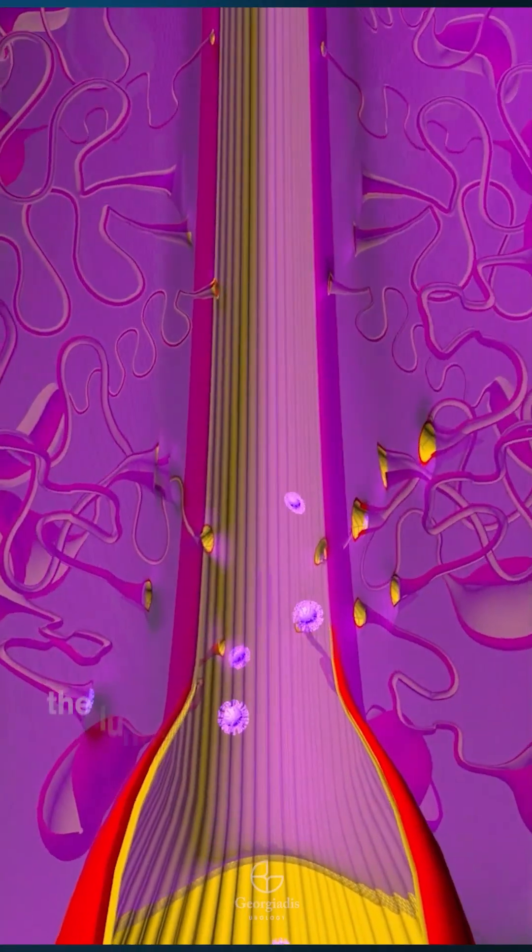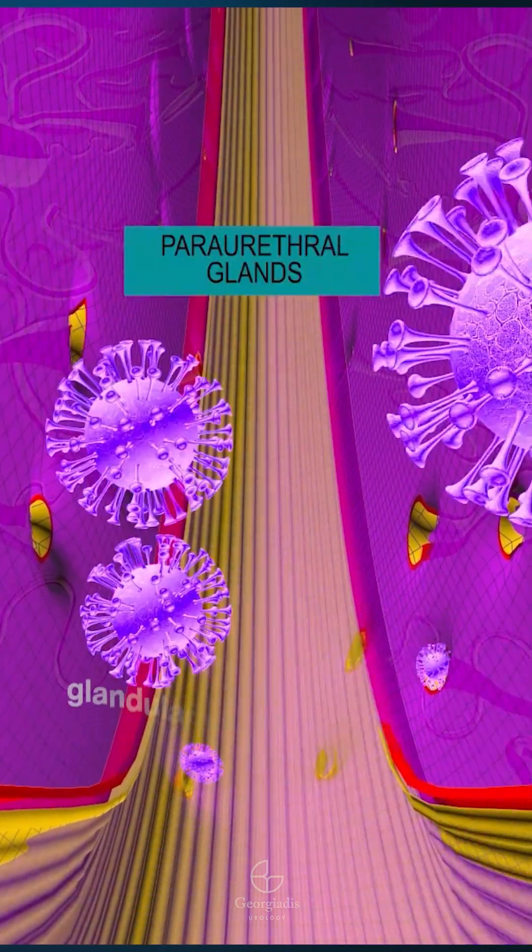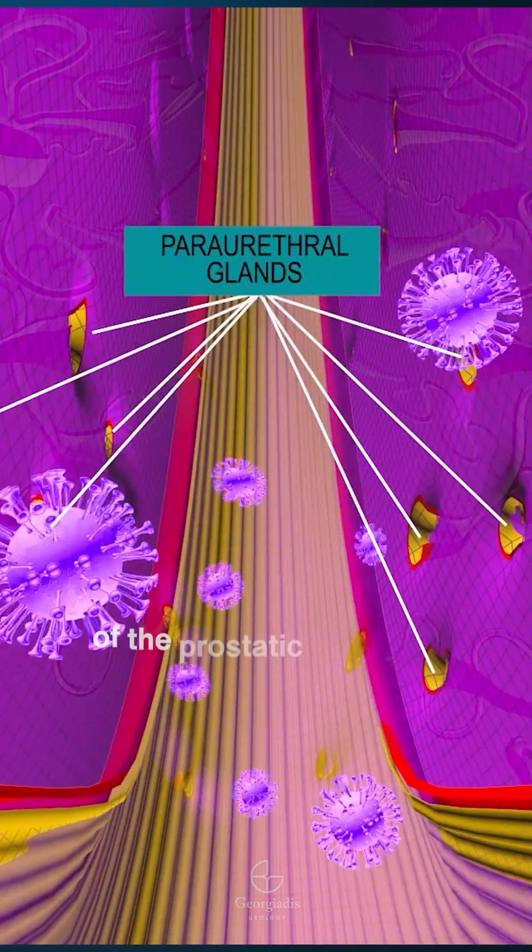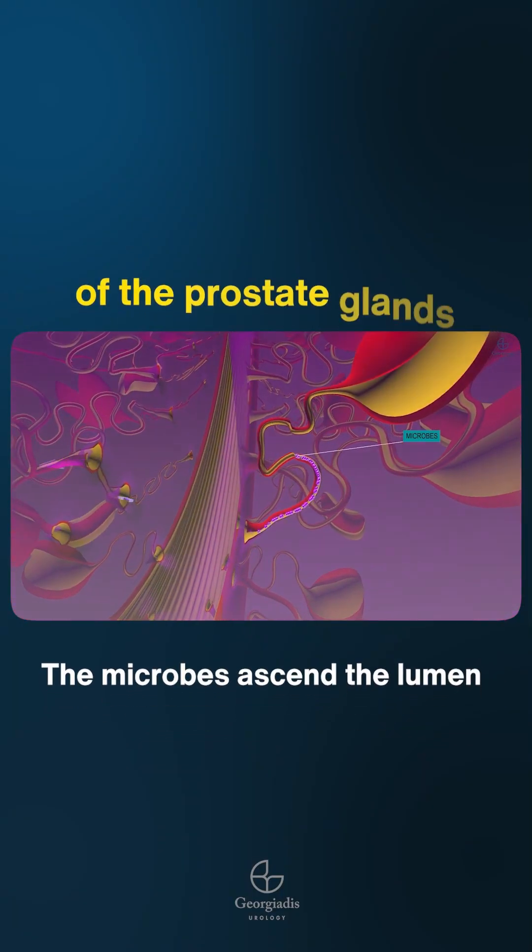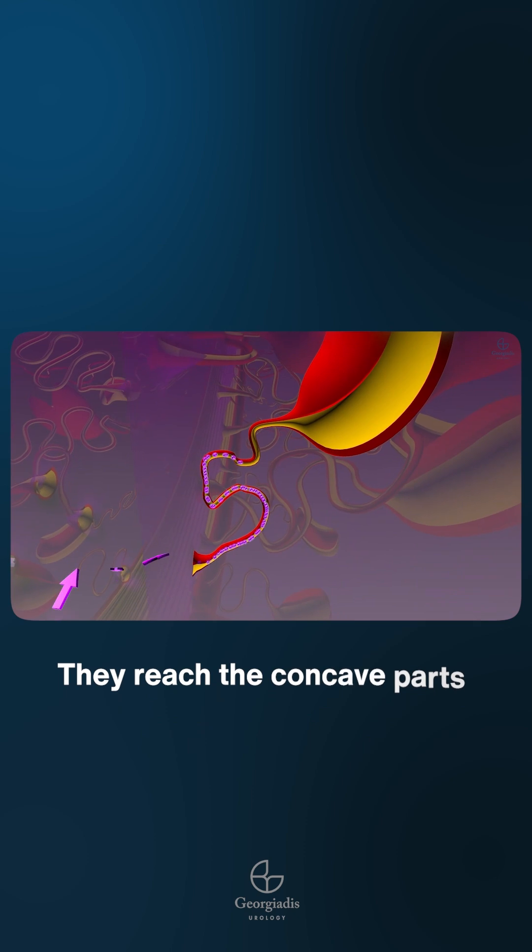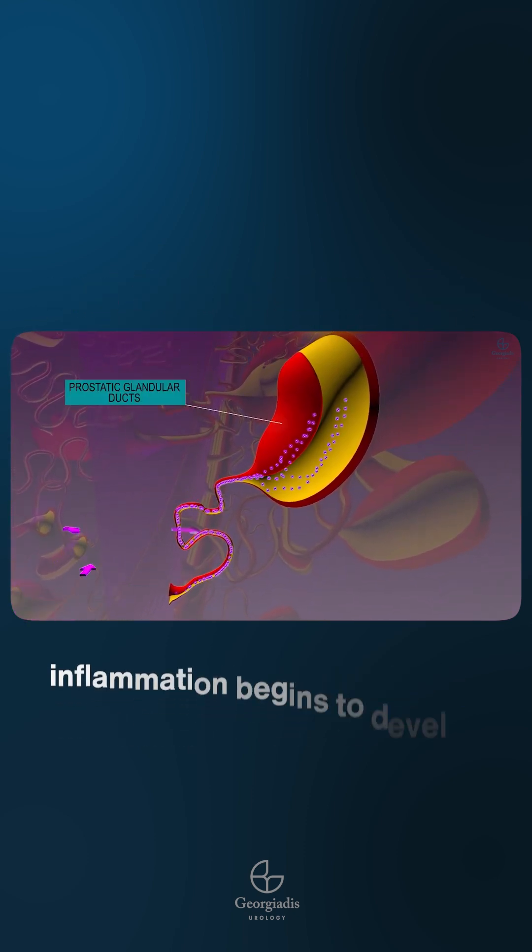We will mainly focus on the prostatic glandular tubules. We show how the microbes ascend the lumen of the urethra and via the pores of the prostatic glandular tubules at the level of the prostatic segment of the urethra, the microbes ascend the lumen of the prostate glands. They reach the concave parts of the prostatic glands, and that is where the inflammation begins to develop.